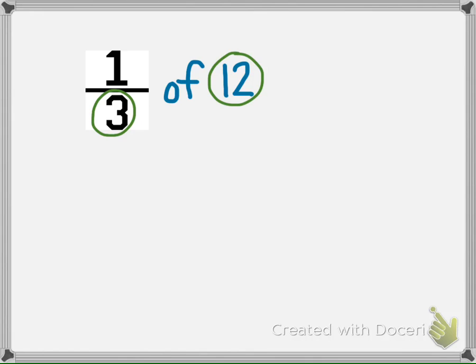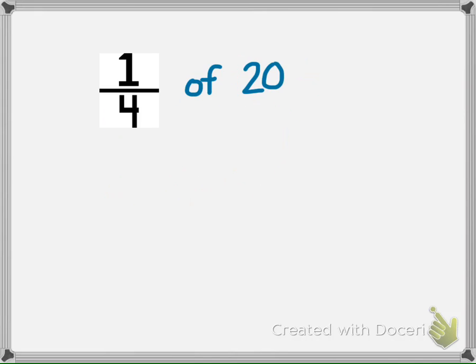Divide twelve by three. Twelve divided by three equals four. So one-third of a set of twelve things is four. You can use division to find the fraction of a set. Try one more. What is one-fourth of twenty?